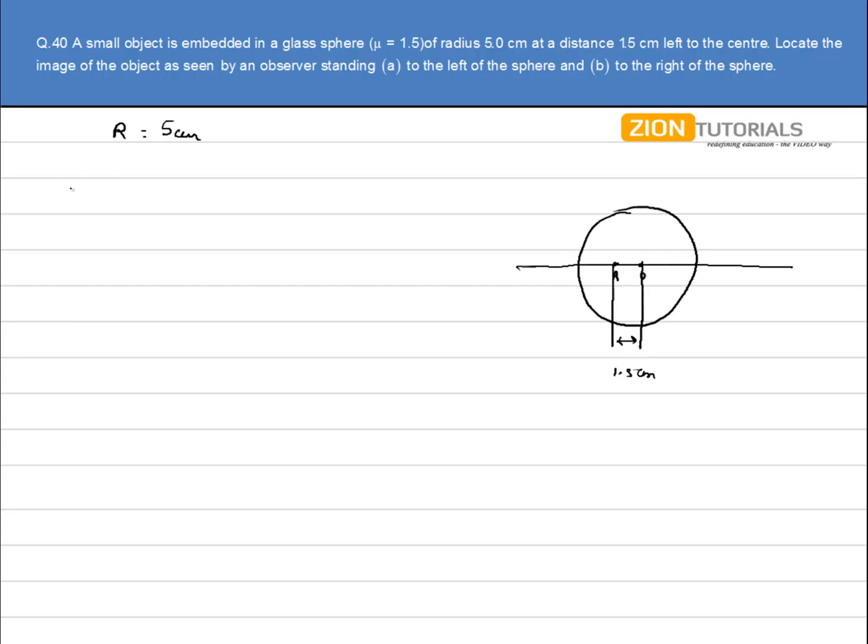Now we know that for curved surfaces, the formula between V, U and F is given as mu1 by U minus mu2 by V. This is equal to mu1 minus mu2 over R.